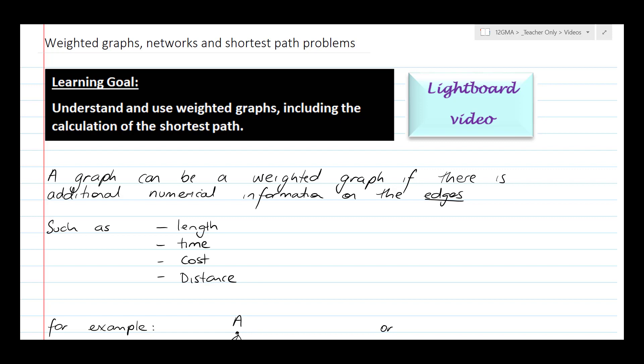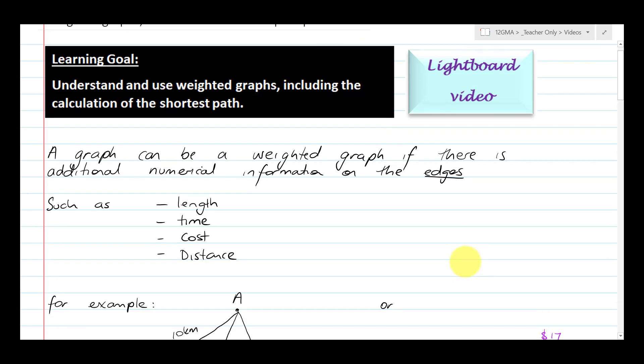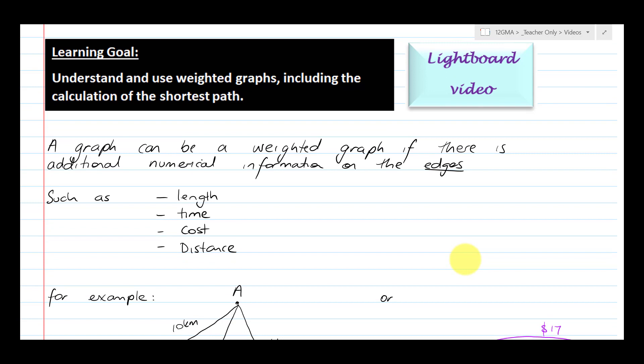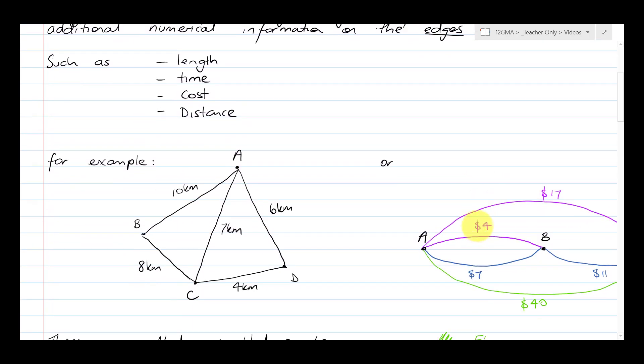So a graph can be weighted, a weighted graph if there's an additional numerical piece of information on the edges. For example, it could be length, time, cost, or distance.